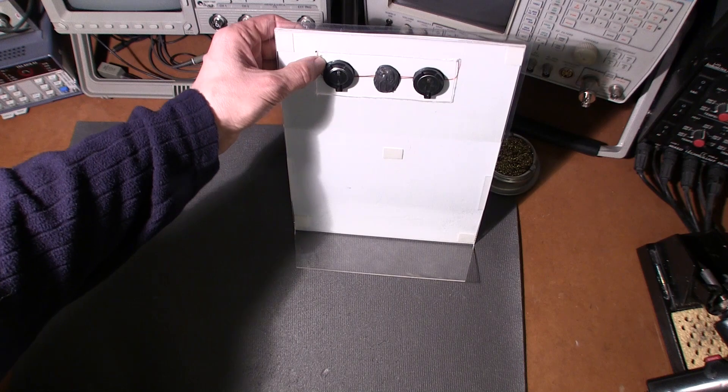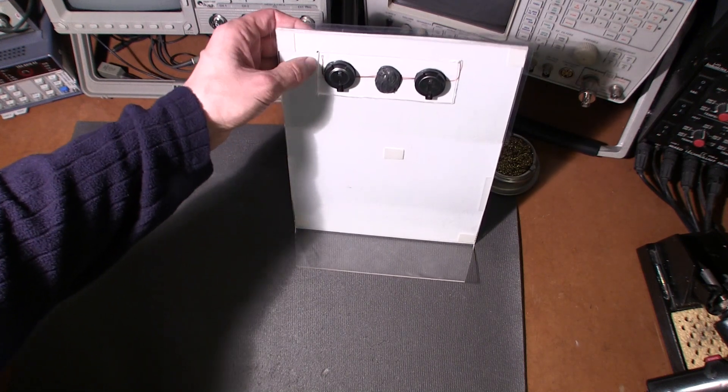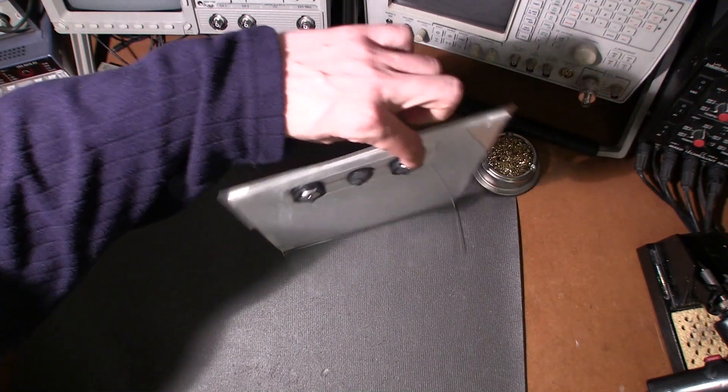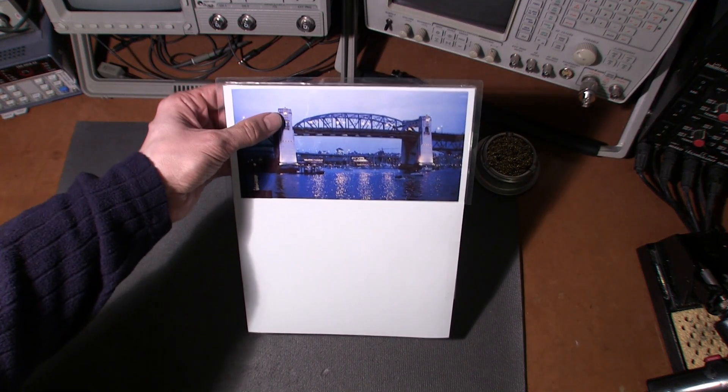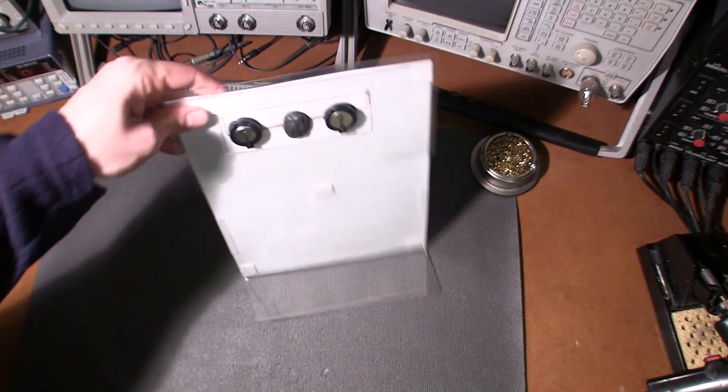But what I did is I took some 0603 LEDs and I just soldered some magnet wire to the back side of the actual LEDs, and I drilled some holes in the picture here right where I thought the LEDs should be in the picture. Then I put the LEDs in those holes and I put some tape over the back side just before I laminated them.